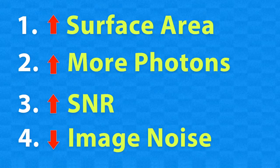Now imagine we do this for a 24-megapixel camera, with each sensel capturing the same number of photons. Nine times 24 million is 216 million photons total. Taking the square root shows a dramatic increase in signal-to-noise ratio. So by increasing the surface area without changing the number of photons per sensel, we can dramatically improve the total signal-to-noise ratio. More surface area means more photons, more photons means greater signal, and greater signal means greater signal-to-noise ratio — all other things being equal.